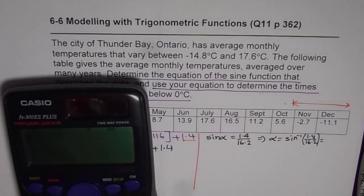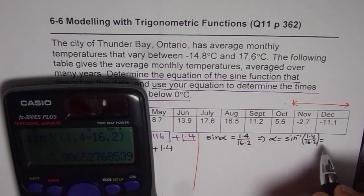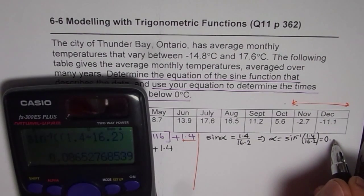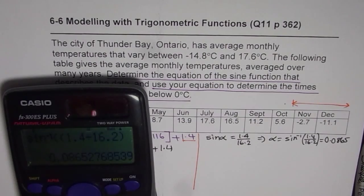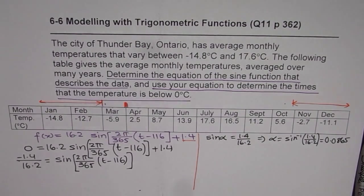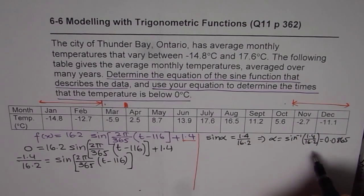So we have sine inverse within bracket 1.4 divided by 16.2, bracket close, equals to. It should be in radians. Your calculator should be in radians. 0.0865. 4 decimal places. This is good enough.